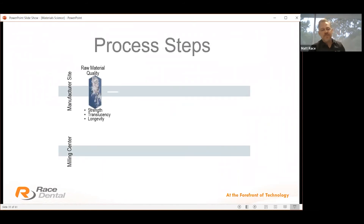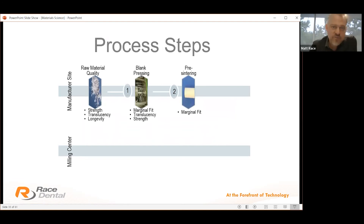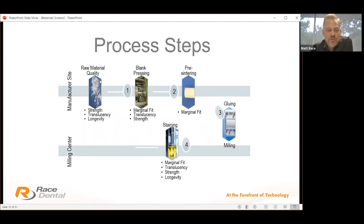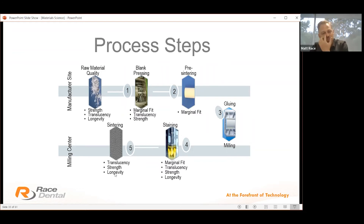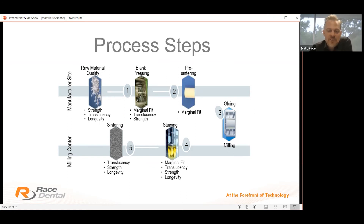Processing steps in manufacturing zirconia also play a role. The quality of the raw material enhances strength, longevity and translucency. The isostatic press of the blank affects marginal fit, translucency and strength. Even the sintering process plays a role in translucency, strength and longevity. The best is the best — we are constantly researching to find better products. Today we use what I believe to be the best zirconia on the planet with Dental Direct.